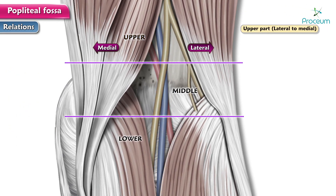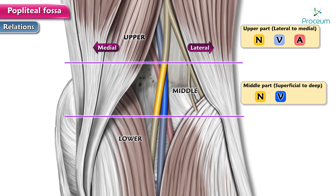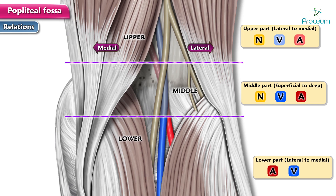In the upper part of the fossa, from the lateral to the medial side, the order is nerve, followed by vein and artery. In the middle part of the fossa, from superficial to deep, the order of arrangement is nerve, vein, followed by artery. In the lower part of the fossa, from the lateral to the medial side, the order of arrangement becomes artery, followed by vein, followed by nerve. This is critically important to remember while understanding the anatomy of the popliteal fossa.